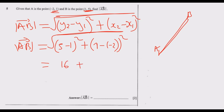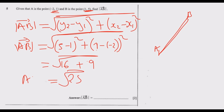1 minus negative 2 is positive 3 — because going from negative to positive crosses zero, so we add, giving 3. Then 3 squared is 9. So we have √(16 + 9) = √25. The square root of 25 is 5, so AB = 5. That's how we get the two marks.